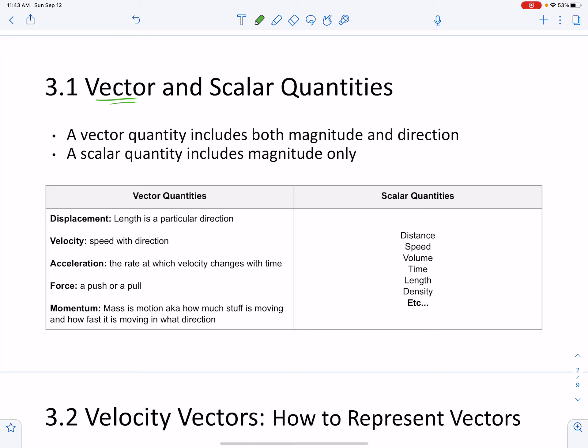We've touched on this a little bit before, but a vector is a quantity that includes magnitude and direction. A scalar is a quantity that's magnitude only and no direction.